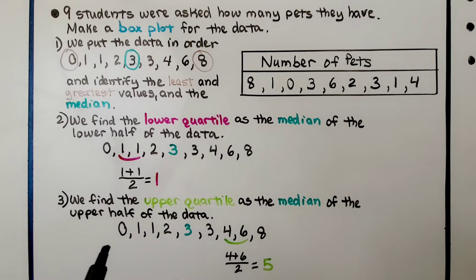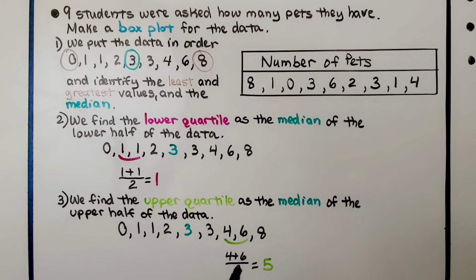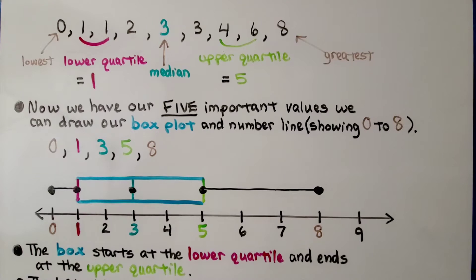We find the upper quartile as the median of the upper half of the data. We have a 4 and a 6 in the middle. We add them and get 10, then divide by 2 to find the mean of these 2 numbers. 10 divided by 2 is 5, so the upper quartile is 5 — that's the median of the upper half of the data.